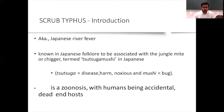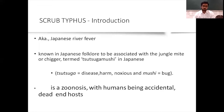Coming to the introduction — typhus has three variants: epidemic typhus, endemic typhus, and scrub typhus. Scrub typhus is the most common in India, so we'll discuss it in detail. It is also known as Japanese river fever, and is associated with a jungle mite or chigger, termed 'tsutsugamushi' in Japanese.